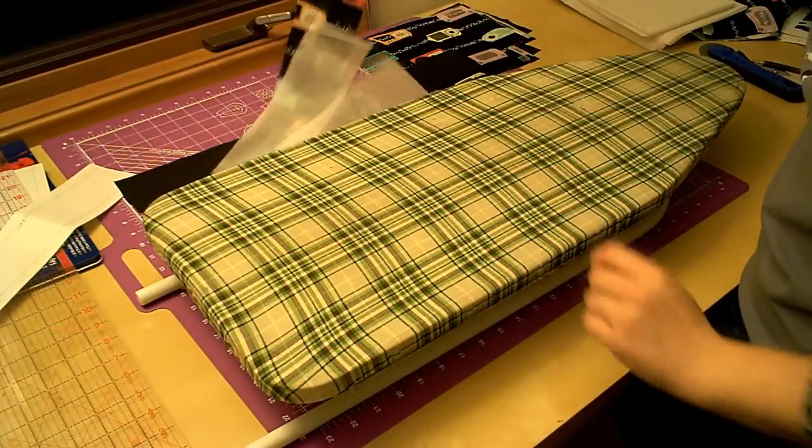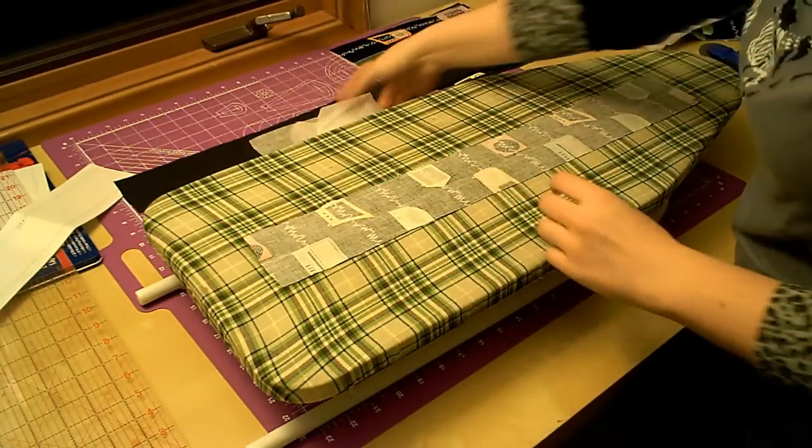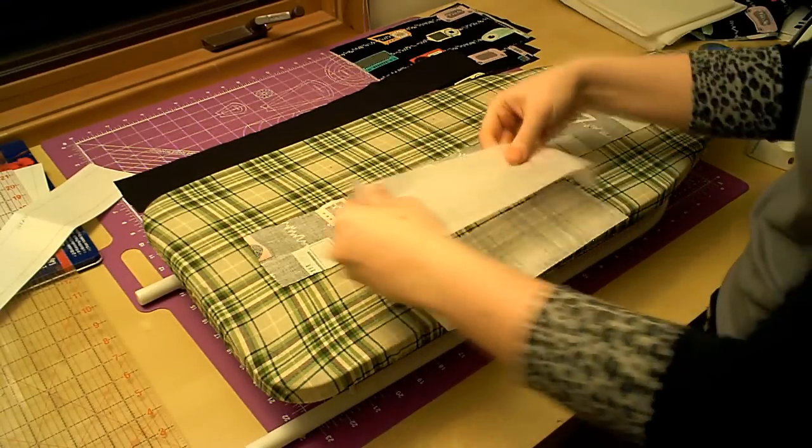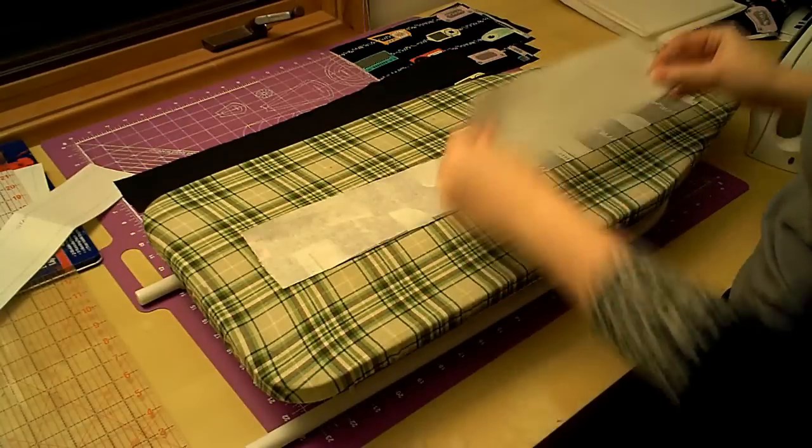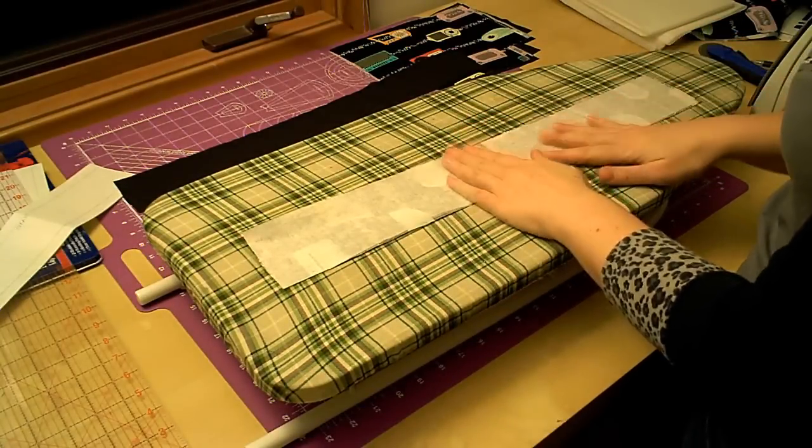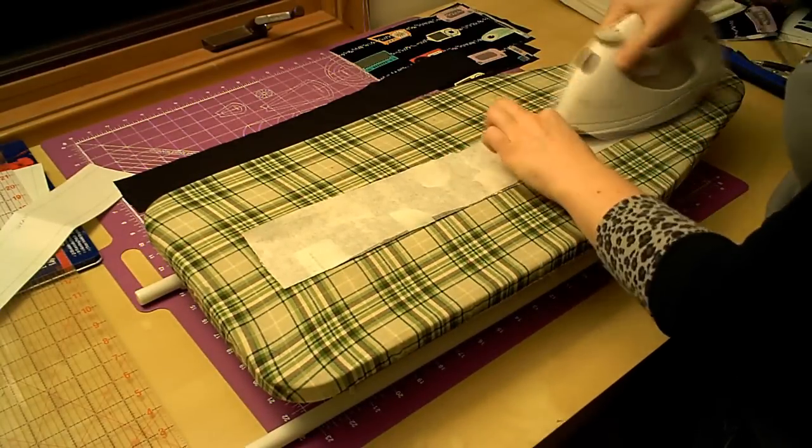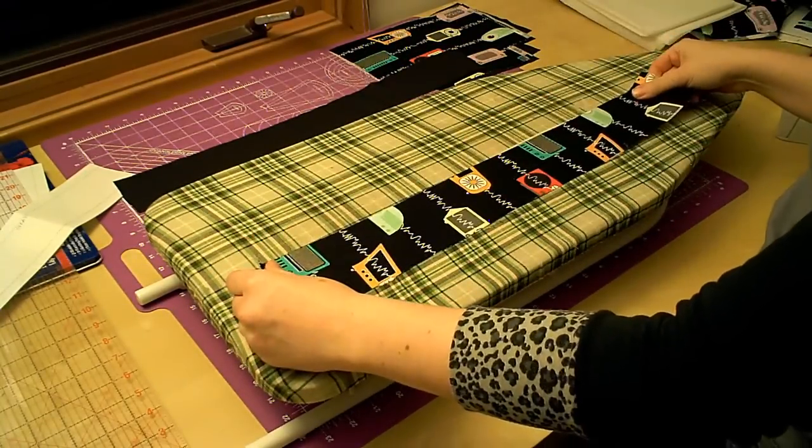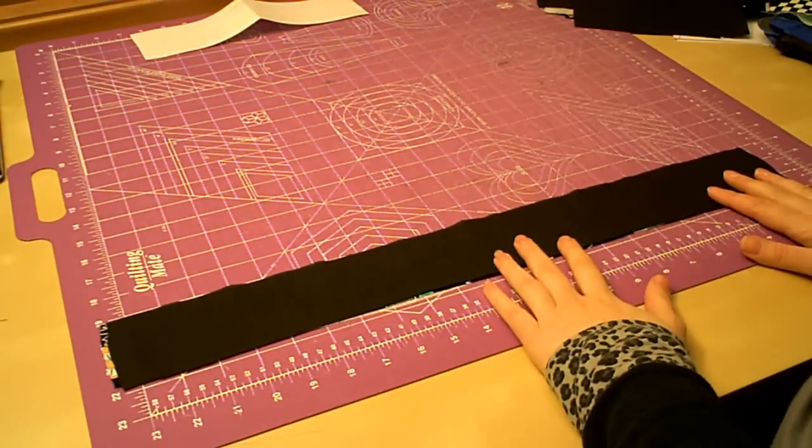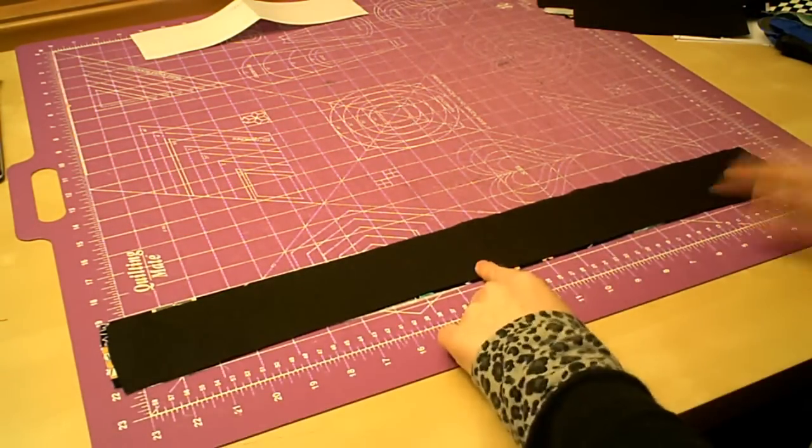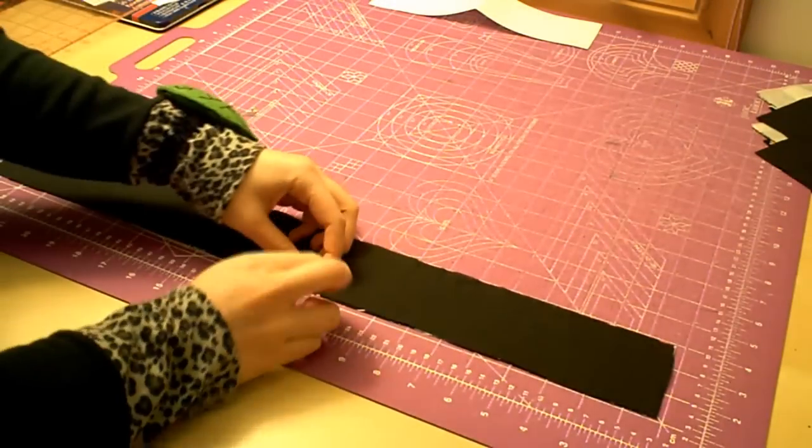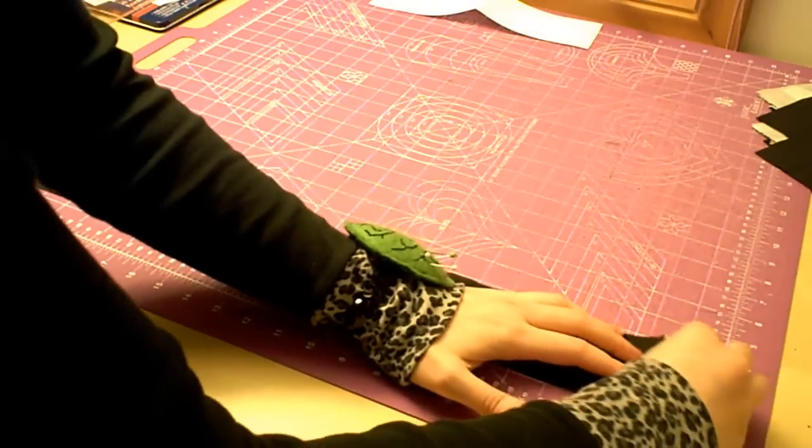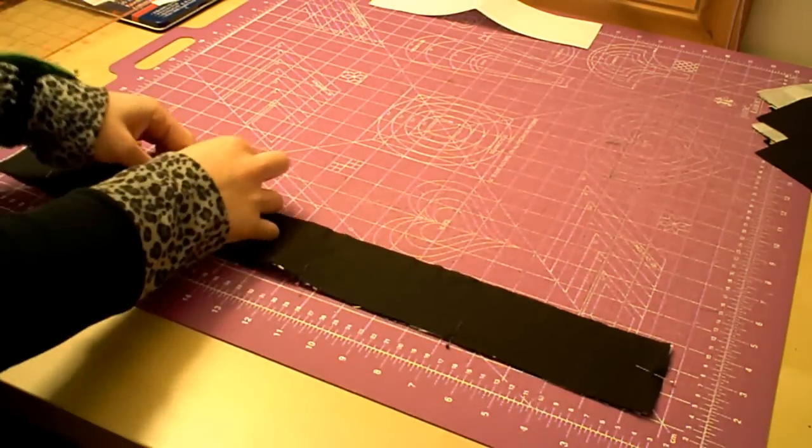Now we're going to apply the interfacing to our main strap fabric. Make sure you have that glue side down, lay them out, get your iron, and fuse. Preferably in warp speed. Okay, it's time to do some actual sewing. We're going to lay the backing or the lining of our strap right side together with our main strap fabric and then pin around the edges. And I will switch pins after this so that you can actually see it on the video.